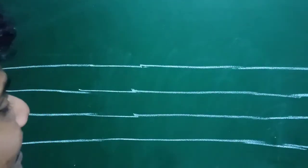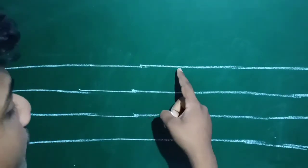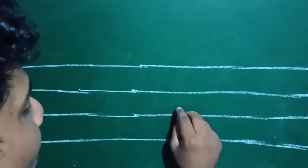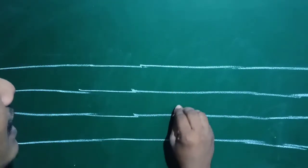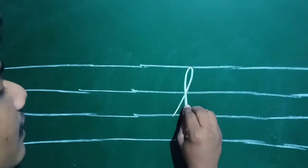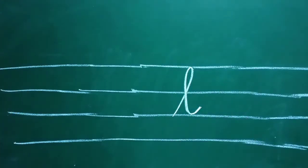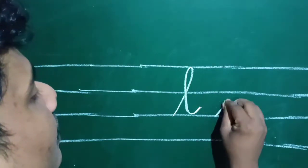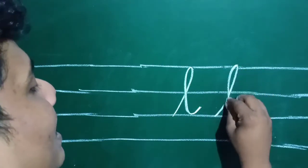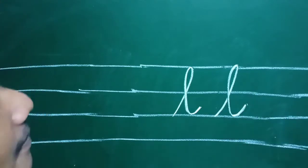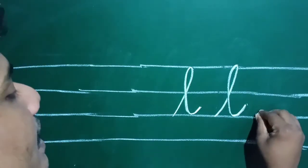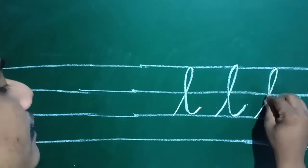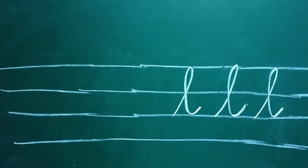Small letter L starts from the third line — 1, 2, 3. Third line. Yes, small letter L. Once again — 1, 2, 3 — starts from here. Small letter L. Simple.